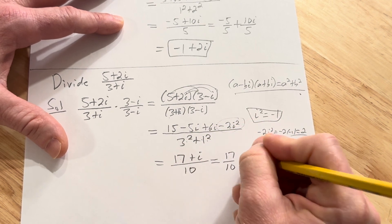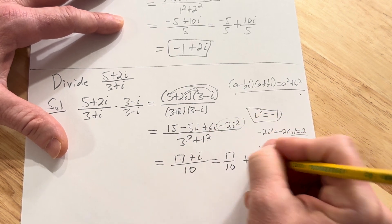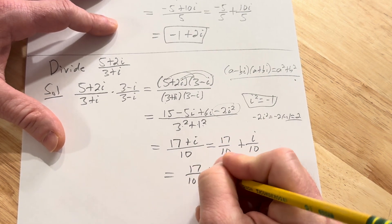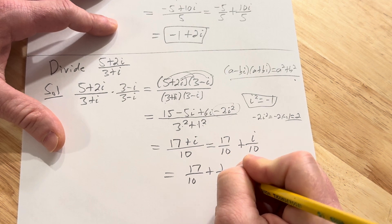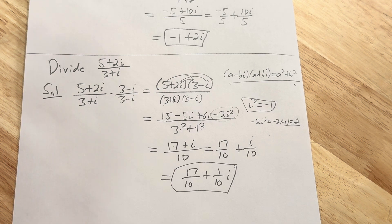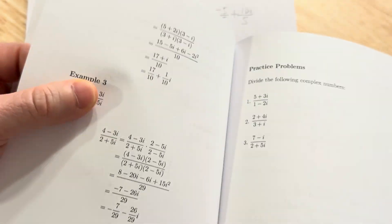This is equal to 17 over 10. Oh, this feels wrong. Plus i over 10. I hope it's right because otherwise I have to I guess not post this video. 17 over 10 plus 1 tenth i. And that should be the answer. I don't know. It feels very wrong. I'm going to look at it because it just doesn't look good. Let's look in the book. Oh, it's correct. It's correct.